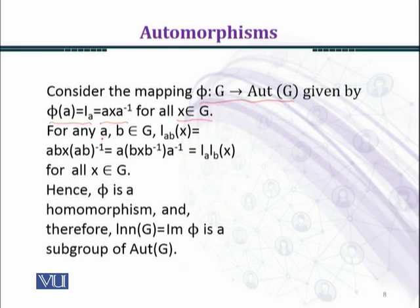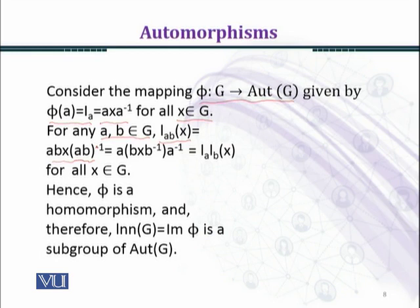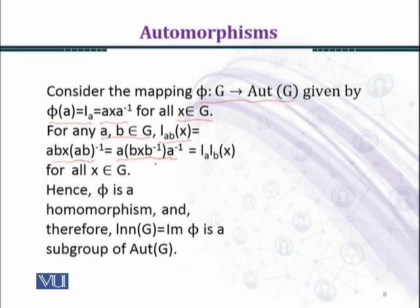For any a, b belonging to G, I_{ab}(x) = (ab)x(ab)⁻¹. This is equal to abxb⁻¹a⁻¹. Now, bxb⁻¹ is equal to I_b(x), so we can replace it and write this as I_a(I_b(x)).